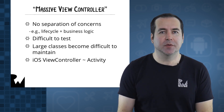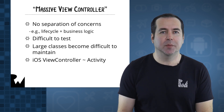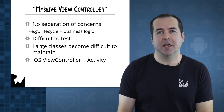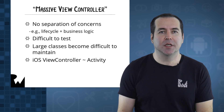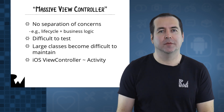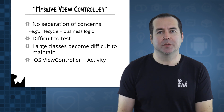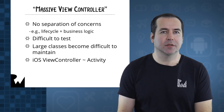It also becomes difficult to unit test your business logic, since you typically must run activity tests on a device or emulator, whereas you'd prefer to run unit tests outside of a device or emulator and solely on the JVM. Finally, your code also becomes difficult to maintain, since it's all piled into a small number of large activity or fragment classes.